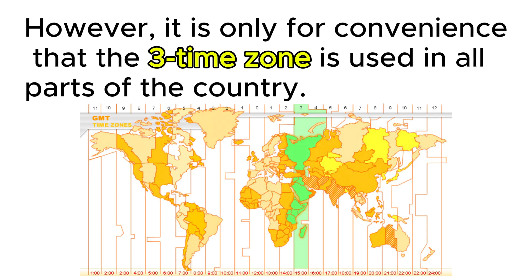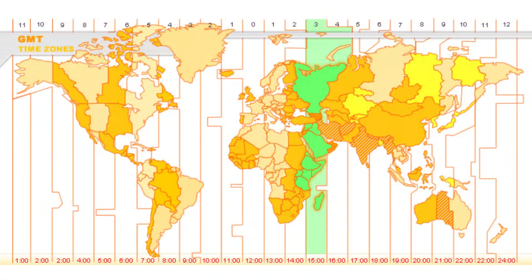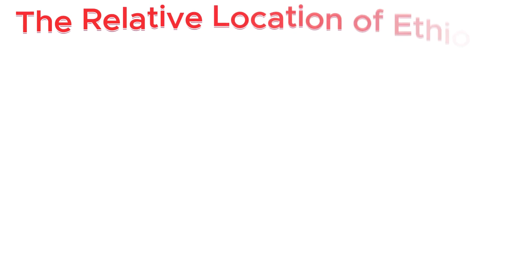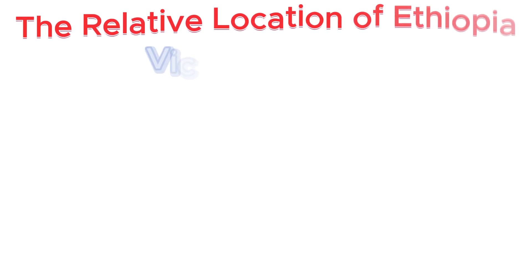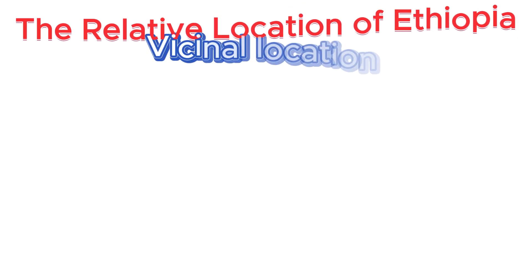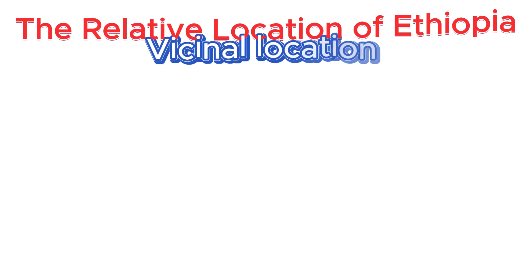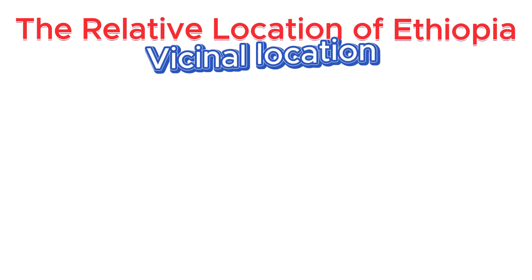However, it is only convenient that a single time zone is used in all parts of the country. Now, let's jump into the relative location of Ethiopia — the vicinal location of Ethiopia, that is, with reference to the location of other countries.